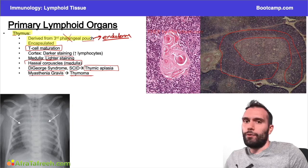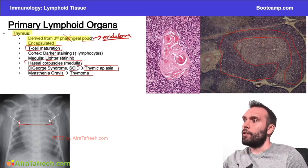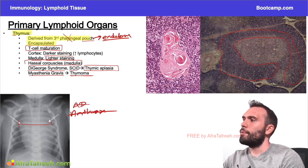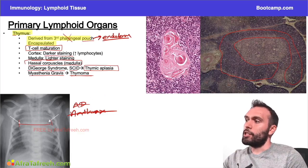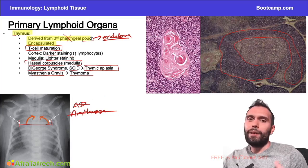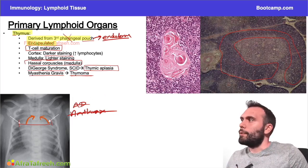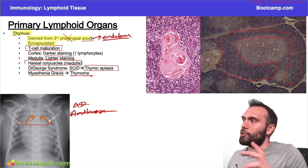When looking at a pediatric X-ray, particularly an infant, you might notice what appears to be mediastinal widening. In a pediatric patient, this is actually quite normal — they'll have a prominent thymic sail sign and a larger thymus. In adults, mediastinal widening would prompt a differential including aortic dissection or anthrax. As we age, the thymus starts to involute and gets replaced with fatty tissue, which is normal. Massive mediastinal widening in a 40-year-old, however, should prompt consideration of a thymoma, especially in the setting of myasthenia.